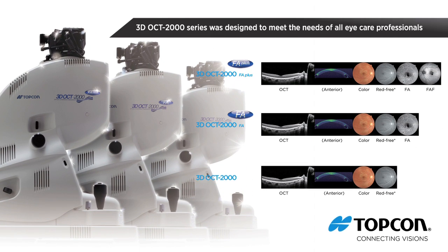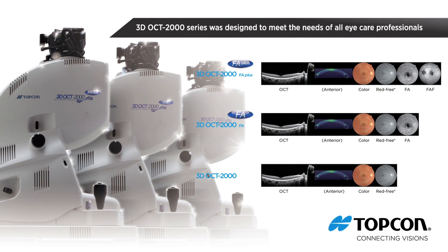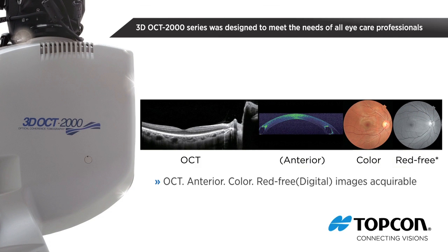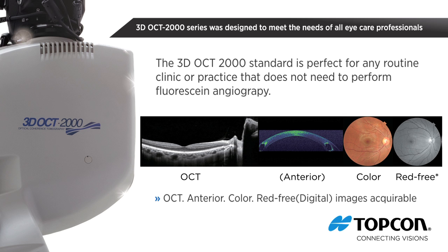There are three models to choose from. The 3D OCT 2000 Standard includes the 50,000 A-scan spectral domain OCT with TopCon FastMap software, anterior segment imaging, and a color fundus camera that provides color and red-free images. This system is perfect for any routine clinic or practice that does not need to perform fluorescein angiography.